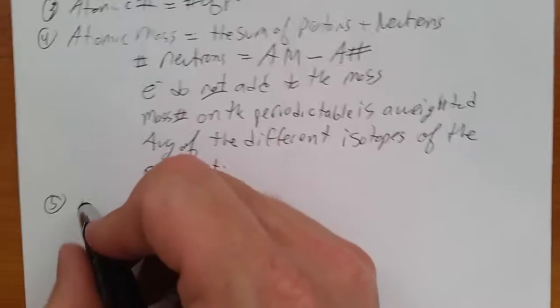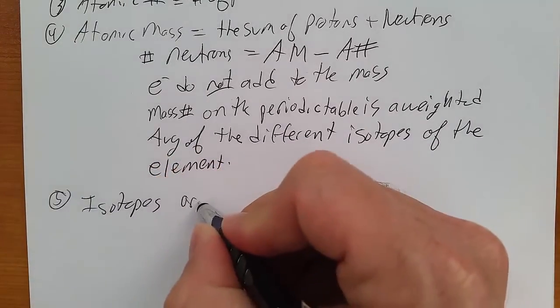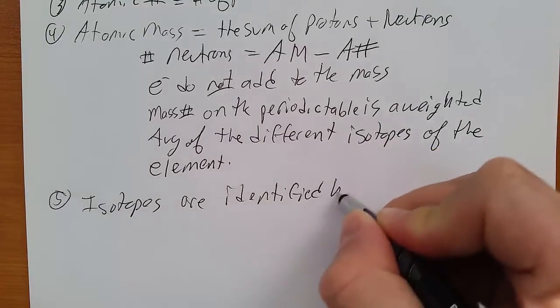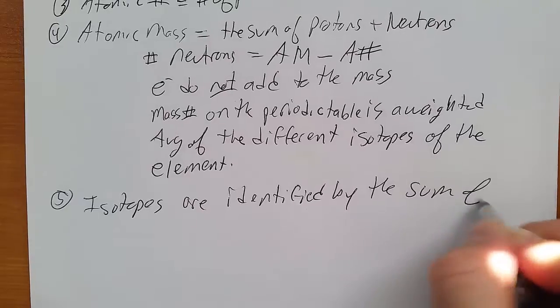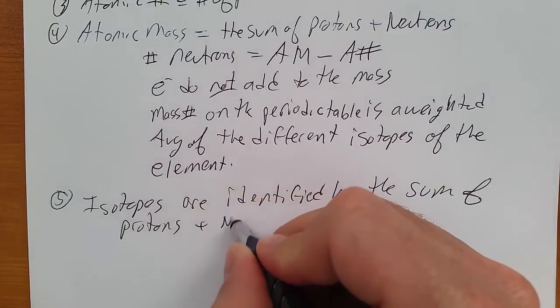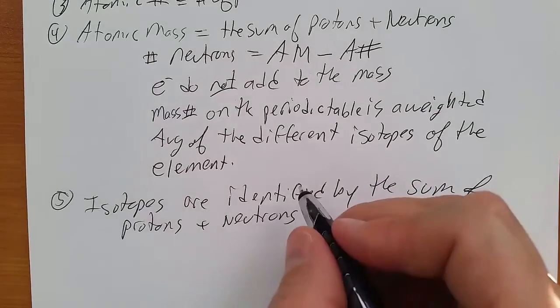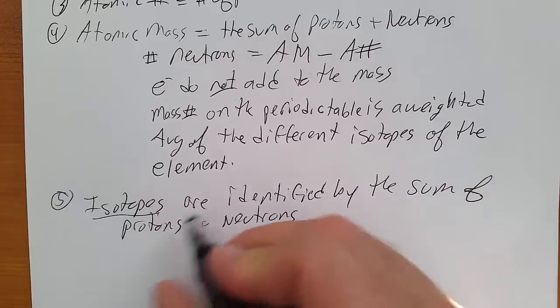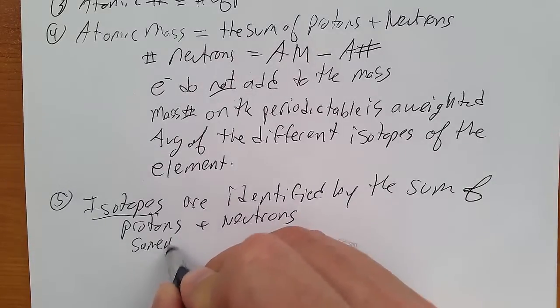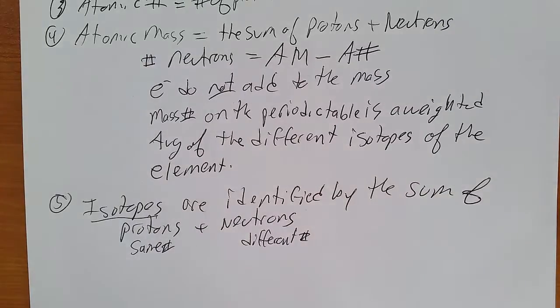Isotopes are identified by the sum of protons plus neutrons. Now remember the definition of isotopes. Same number of protons. Different number of neutrons.